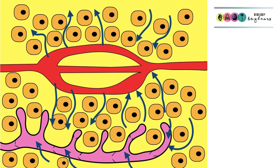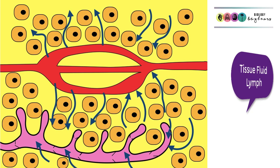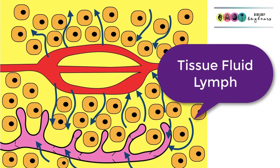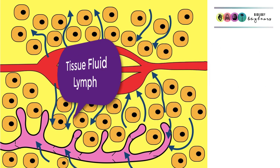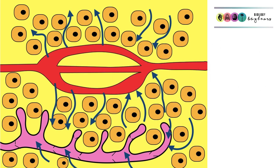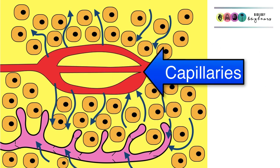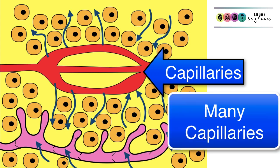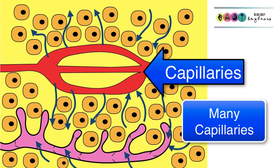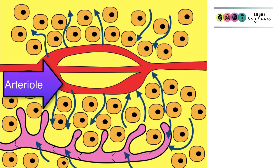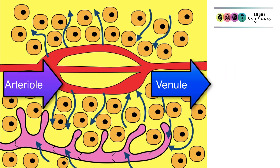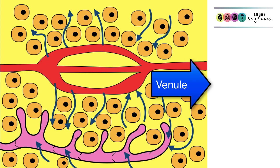The best way to understand the lymphatic system is to know how tissue fluid is firstly formed, and then how lymph is formed. This all starts with the blood, particularly the blood capillaries, which are usually found together in structures known as capillary beds. The vessels leading into capillaries are arterioles, and the vessels leading out are venules, which link into veins.